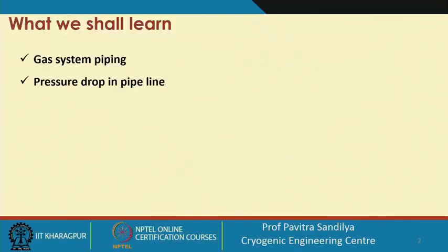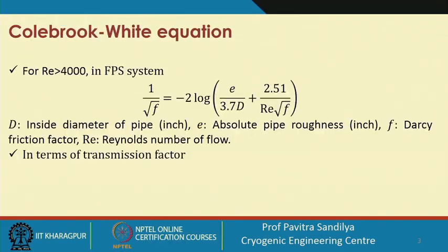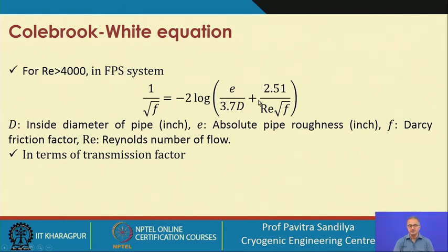We shall be looking into those which are used for natural gas systems. First, we shall see the Colebrook-White expression. In the FPS system, for a Reynolds number more than 4000, it is given by this particular expression. The diameter and roughness factor are given in terms of inches. The first term signifies the roughness effect and the second term signifies the Reynolds number effect. This expression is implicit in friction factor.